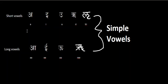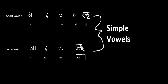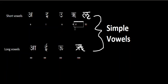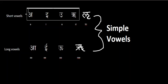For the long vowels, listen to the difference: we have a, i, u, and ri. The long vowels are stretched out longer than the short vowels. If you listen to the difference — a, a; i, i; u, u; ri, ri; and lri — lri is the only one that doesn't have a lengthened version.